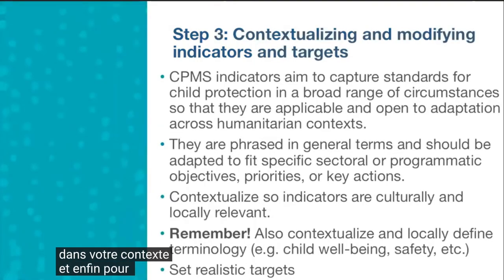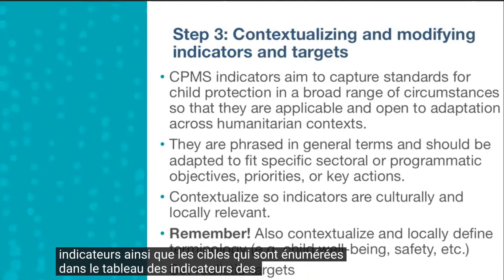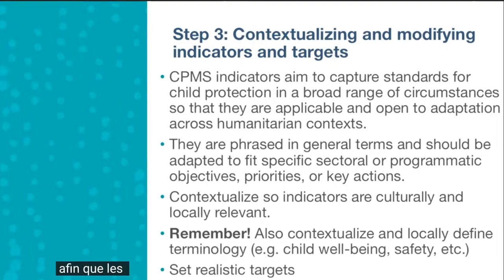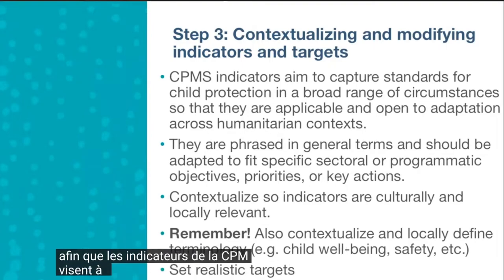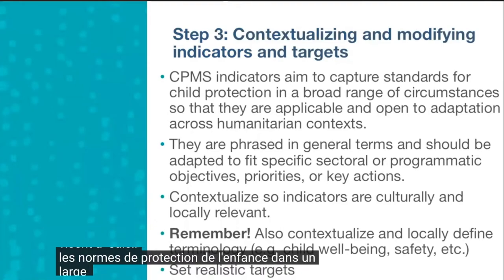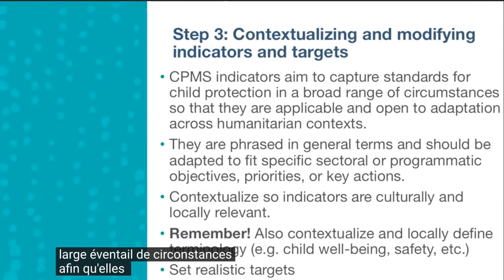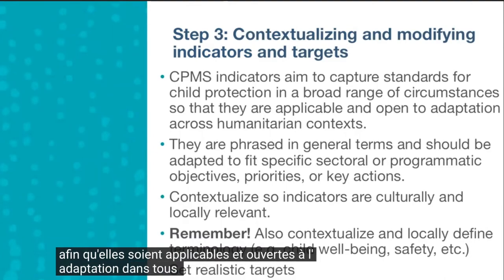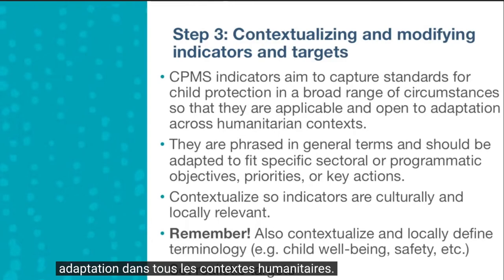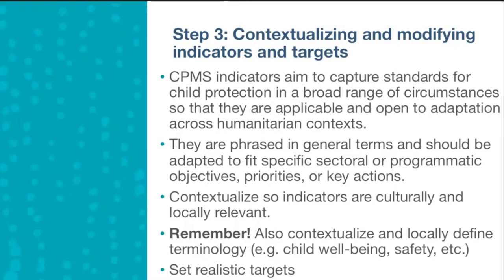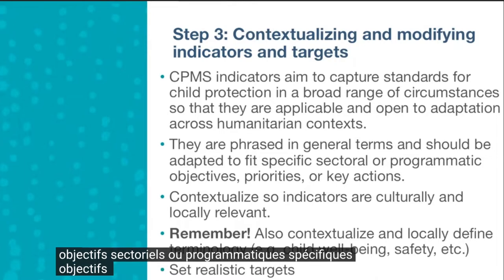The last step is to contextualize and modify the indicators as well as the targets listed in the Child Protection Minimum Standards indicator table. The CPMS indicators aim to capture standards for child protection across a broad range of circumstances so they are applicable across humanitarian contexts. As a result, they will need to be contextualized to your specific context if necessary. They are often phrased in general terms and should be adapted to fit specific sectoral or programmatic objectives and priorities.